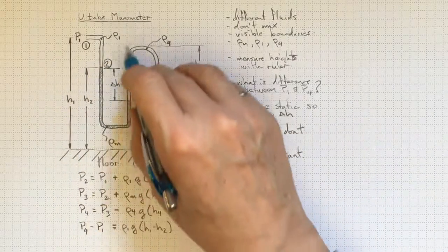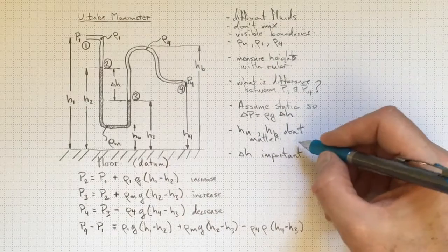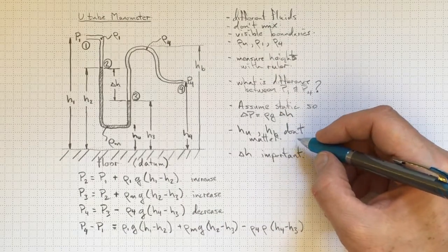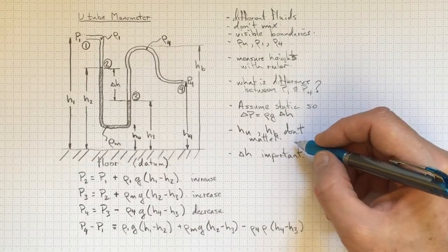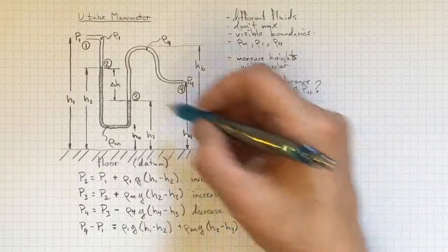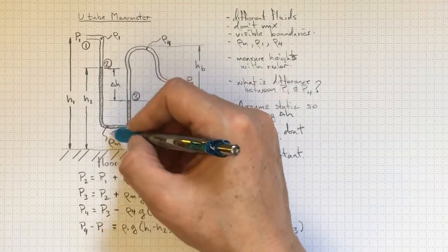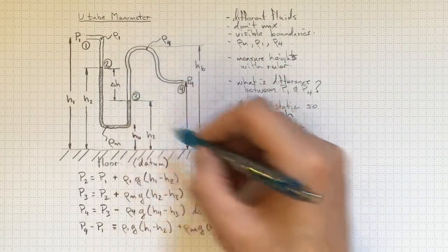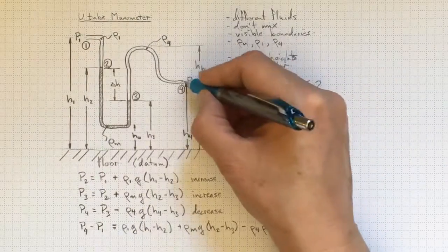We can take this general idea of how a U-tube manometer functions and apply it to some specific applications a little bit later. That will allow us to make practical measurements using typically liquid levels in the manometer to be able to detect differences in pressures.